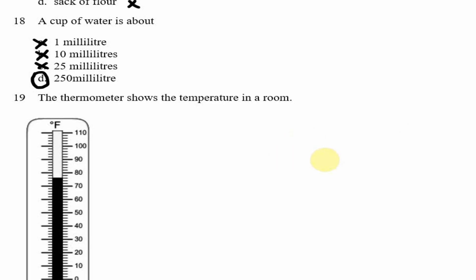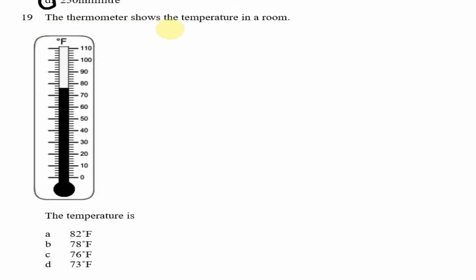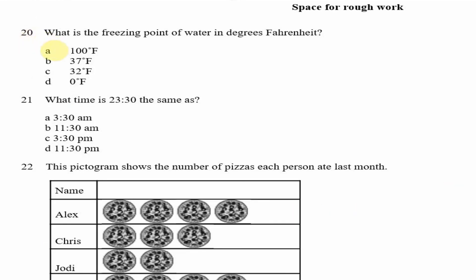Question 19: The thermometer shows the temperature in a room. Looking at the graduations between 0 and 10 — each mark represents 2 degrees Fahrenheit, going 0, 2, 4, 6, 8, 10. Looking at the reading: 72, then 74, then 76. So the temperature reads as 76 degrees Fahrenheit.